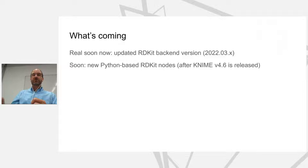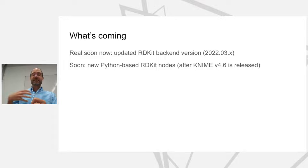What's coming: sometime in the next couple of weeks we'll update to the most recent RDKit backend so you have all the new functionality. The thing I'm most excited about is that when KNIME 4.6 is released, we will be able to write KNIME nodes in Python instead of Java. As a Python programmer myself, I'm super excited because it's going to make it a lot easier to write nodes, and I'm hopeful we'll start to see a lot more nodes becoming available. Happy to answer questions in the forum.